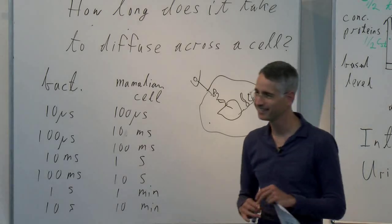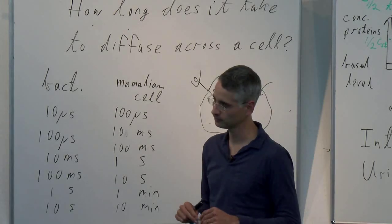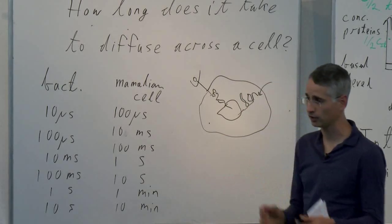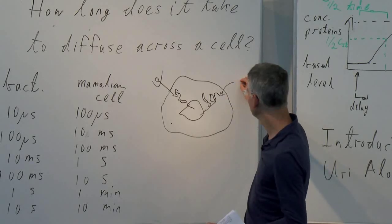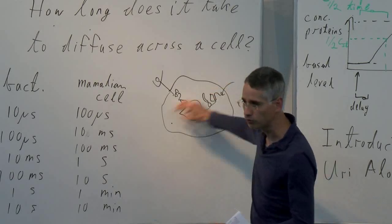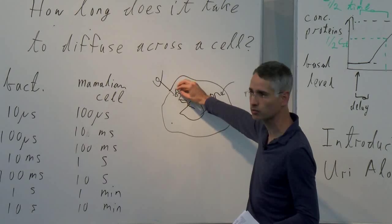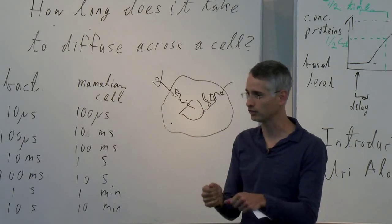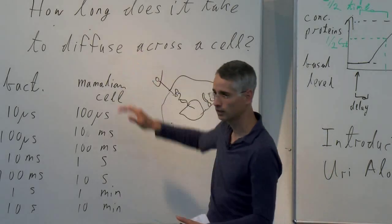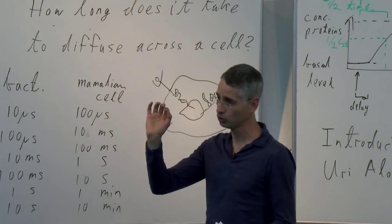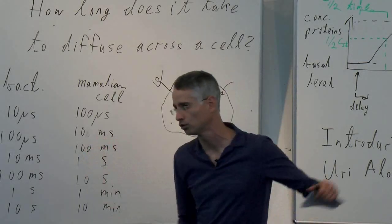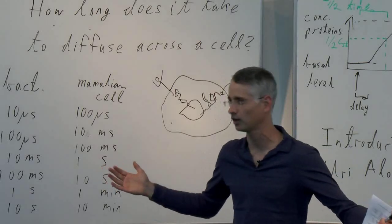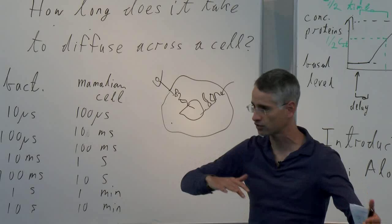A question arises: what force drives the antibiotic or transcription factor across the cell? The answer is that no force is needed — it happens by diffusion. Small molecules undergo random walks, getting bumped by water molecules and other things, and through that random walk they achieve everything they need to do inside the cell: moving, activating, repressing. It's quite amazing.